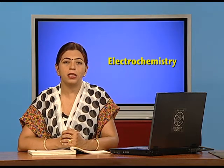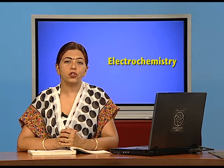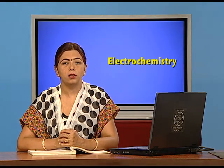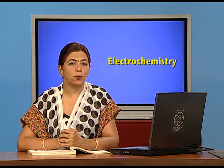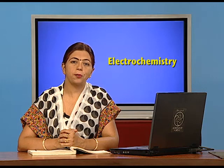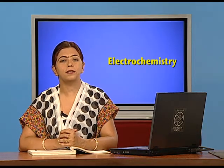The next application of electrochemical phenomena is cells and batteries, which we use in day-to-day life — dry cells in transistors or torches, mercury cells in wristwatches or hearing aids. A battery is a combination of two or more galvanic cells in series. Commercial cells are classified as primary cells and secondary cells, with fuel cells as a third category to be studied later.